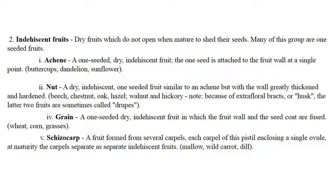Grain means all grasses — this is a one-seeded, dry, indehiscent fruit. Schizocarp is a fruit formed from several carpels, where each carpel encloses a single ovule at maturity. Carpels separate as separate indehiscent fruits, like dill, wild carrot, or mallows.